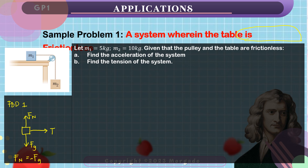The free body diagram for mass 2 involves two forces only: a downward force Fg and an upward force due to the string, which is tension. Remember that mass 2 accelerates downwards, therefore we cannot say that the force of gravity equals the tension force, because if they were equal, the object would not accelerate at all. Now we go back to the general formula: net force equals mass times acceleration.